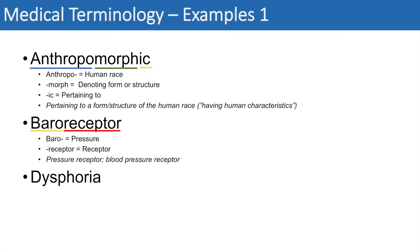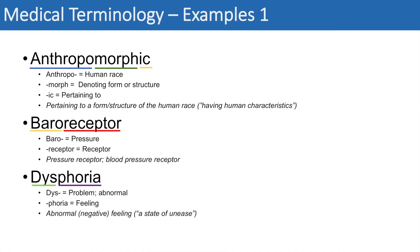The next practice word is dysphoria. Just break it down into pieces. Dys means a problem or something that is abnormal. And phoria means feeling or relating to a feeling. So put together, it literally means an abnormal or negative feeling — and it really means a state of unease.